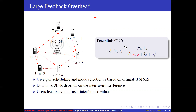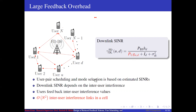Here we have the expression for downlink SINR when the uplink user is U and the downlink user is D. The numerator is the received power to user D, which the base station can estimate using reciprocity principles. The denominator is the sum of inter-user interference, co-channel interference, and noise power to user D. The base station can know the values of co-channel interference and noise power using traditional feedback mechanisms used in half duplex cellular systems. However, the base station cannot estimate the value of inter-user interference, because these inter-user interference links are not connected to the base station. Therefore, users need to feed back these values. In a cell with N users, there are N-choose-2 inter-user interference links, so this number grows as order N squared, constituting enormous feedback overhead.